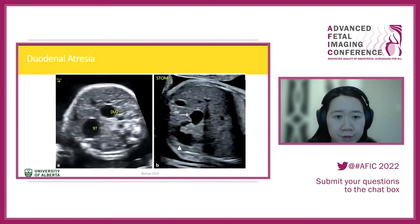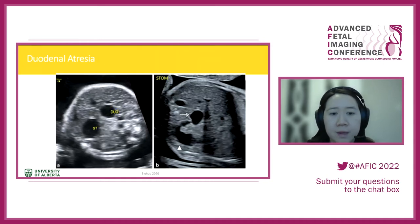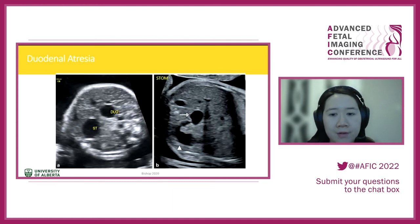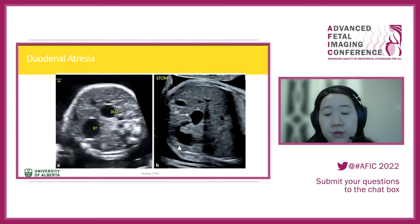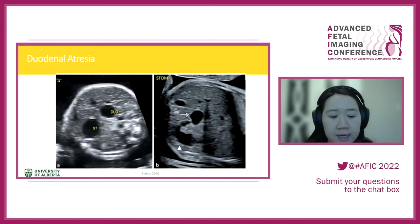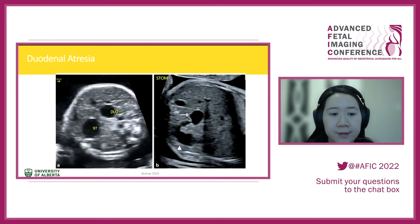More pictures of duodenal atresia: on the left side is the classic double bubble sign — your stomach and then your duodenum. Sometimes you can see a C-shaped amount of fluid traversing from the stomach down to the duodenum where it's obstructed, which can be quite diagnostic for detection of duodenal atresia.